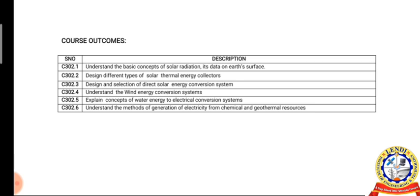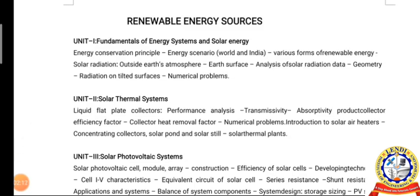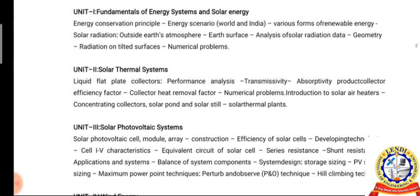And extracting electrical energy from the Earth's surface, called geothermal sources. The syllabus for Renewable Energy Sources: Unit 1 covers the fundamentals of energy systems, including energy conversion principles and scenarios, solar radiation outside the Earth's atmosphere, solar radiation on the Earth's surface, and solar radiation data analysis and related numerical problems.